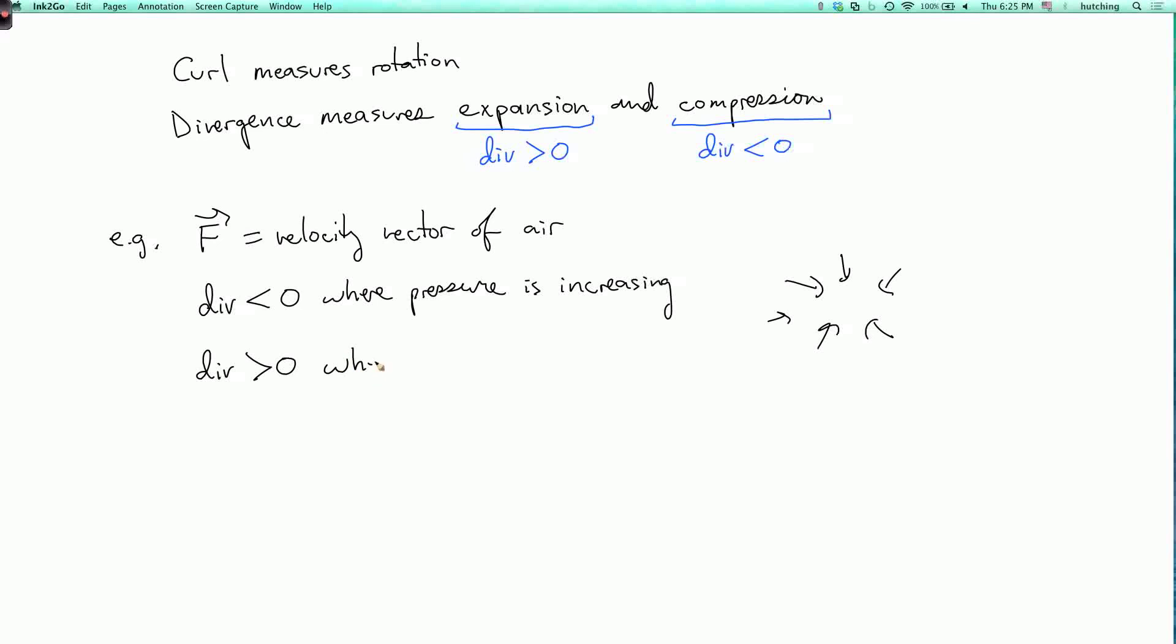And divergence is greater than zero where the pressure is decreasing. So that would be if air is moving away from some area, then the pressure there is going to get lower. And divergence is equal to zero where the pressure stays the same.